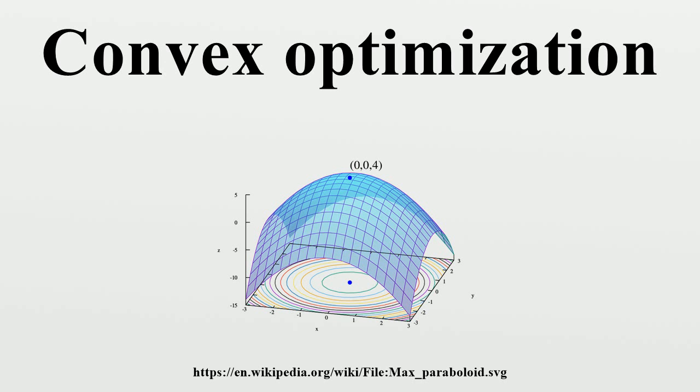called maximum principles, are useful in the theory of harmonic functions, potential theory, and partial differential equations. The problem of minimizing a quadratic multivariate polynomial on a cube is NP-hard. In fact, in the quadratic minimization problem, if the matrix has only one negative eigenvalue, is NP-hard.